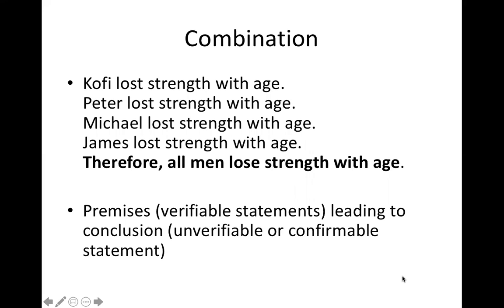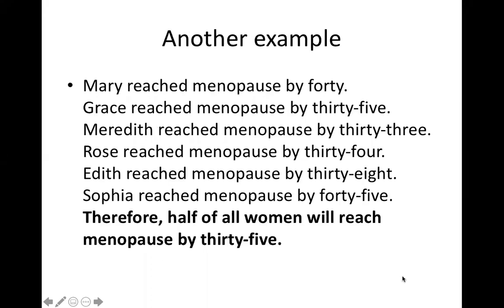For an inductive argument, the premises are most of the time factual statements. Another example: Mary reached menopause by 40, Grace by 35, Meredith by 35, Rose by 34, Edith by 38, Sophia by 45. Therefore, half of all women will reach menopause by 35. This is another collection of factual premises leading to a confirmable conclusion.